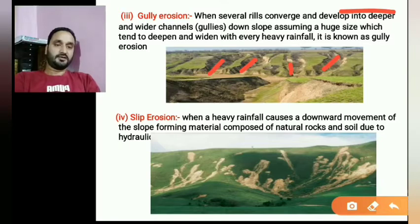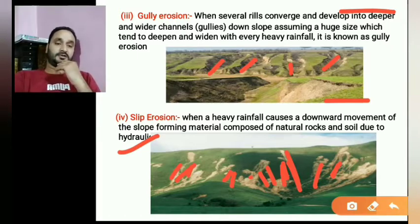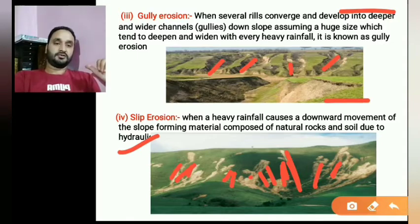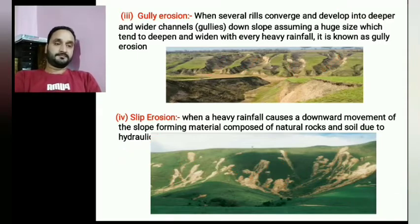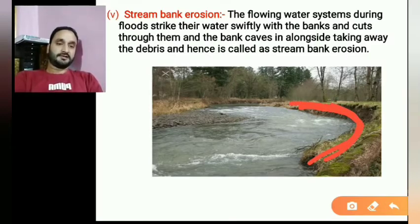Slip erosion occurs when heavy rainfall causes a downward movement along a slope, involving foreign materials composed of natural rocks and soil due to hydraulic pressure. When there is a mountain slope and there is downward movement of slope material, it is called slip erosion. For example, this can be observed on the Jammu-Srinagar Highway where slope slippage is common.